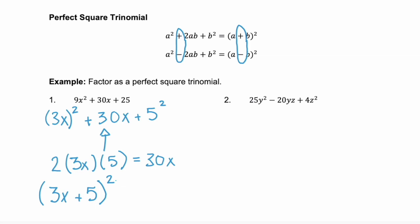Let's look at another example. 25y squared minus 20yz plus 4z squared. Well, 25, as we just saw, is the same as 5 squared. So 25y squared is 5y all squared. And our last term, 4z squared, is the same as 2z squared. So we want to see, is 2 times our first term, 5y, times our last term, 2z, the same as our middle term, 20yz. It sure is.